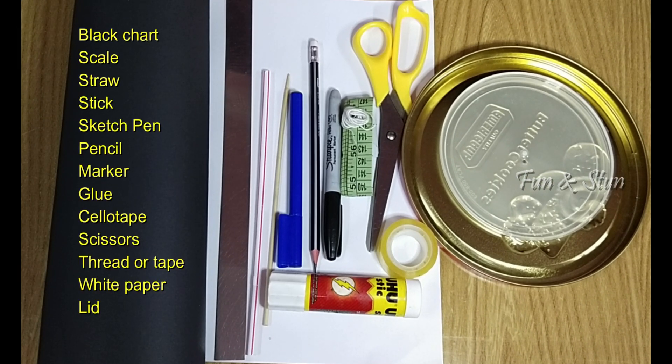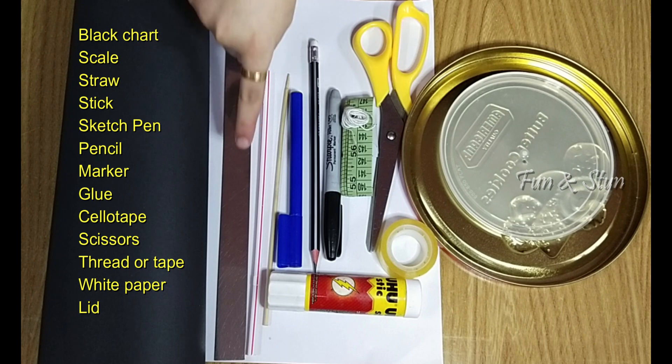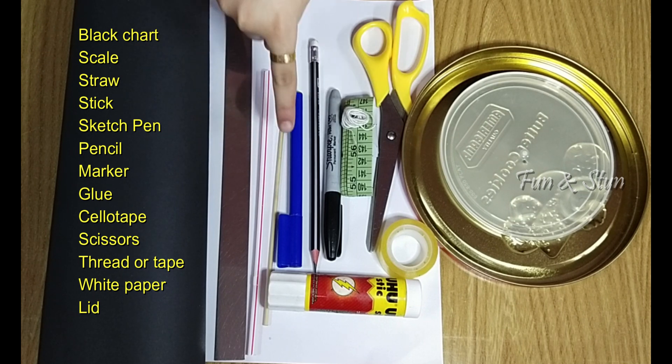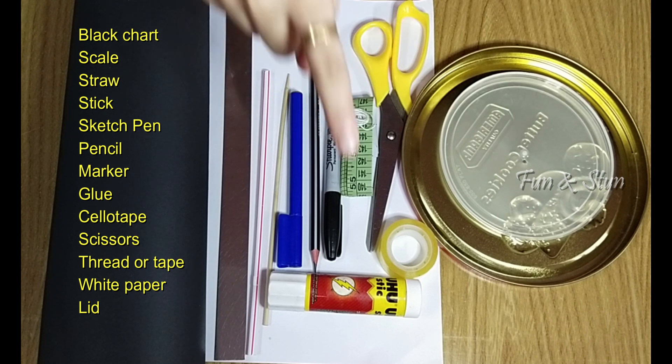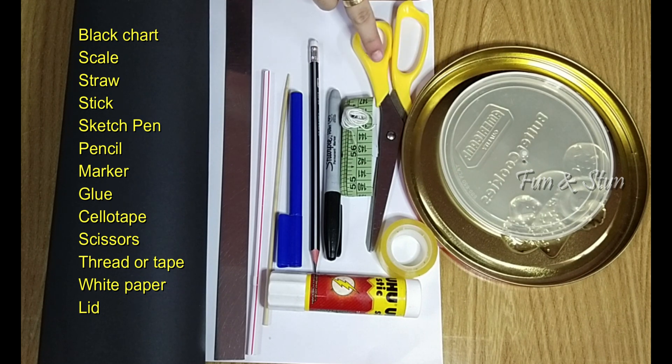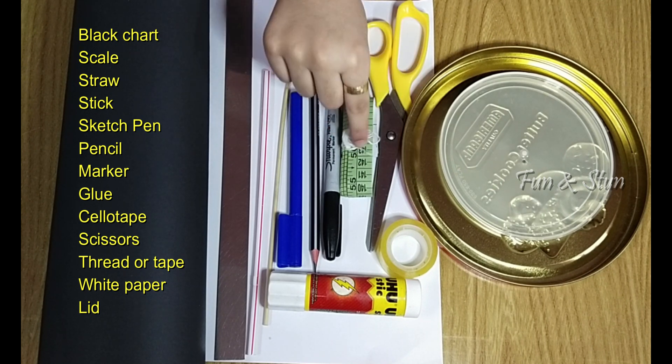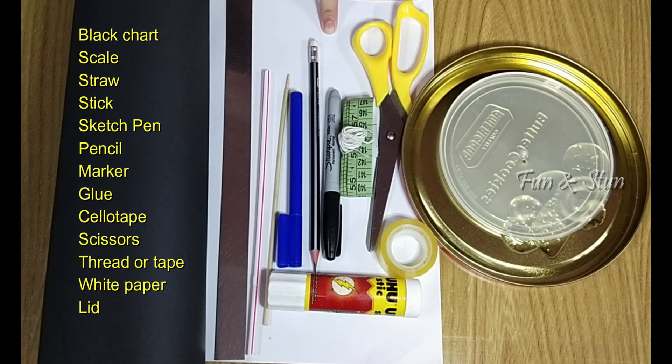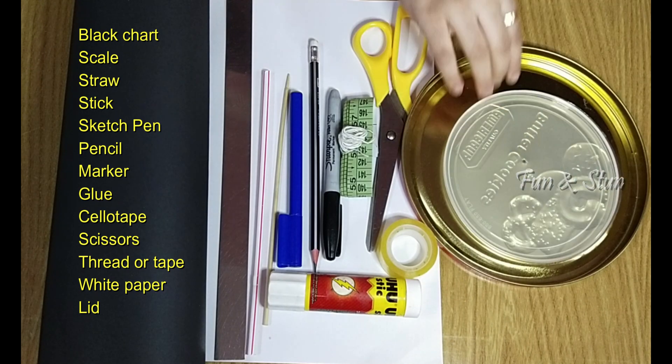To make Zoetrope, we need black chart paper, scale, straw, stick, sketch pen, pencil, marker, glue, cello tape, scissors, thread, measuring tape, white paper, and a small or big lid of your choice.